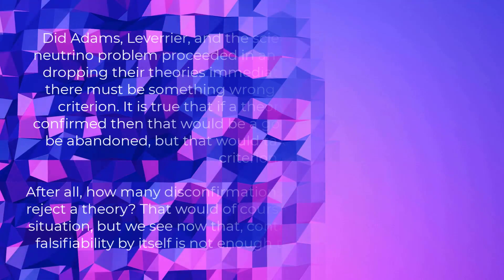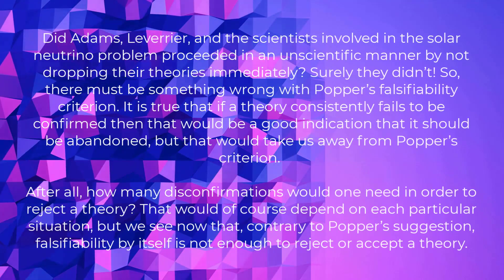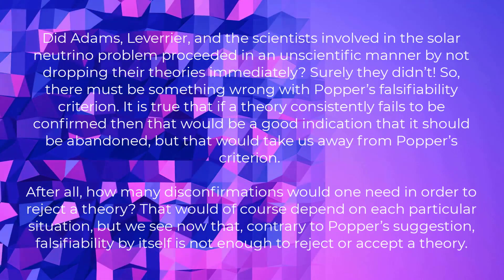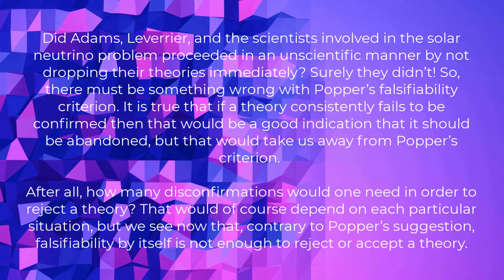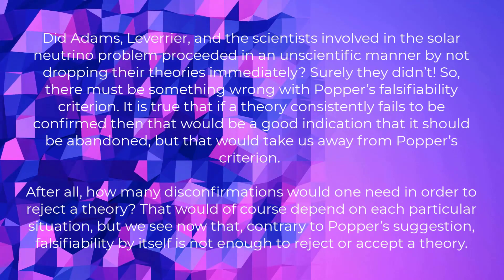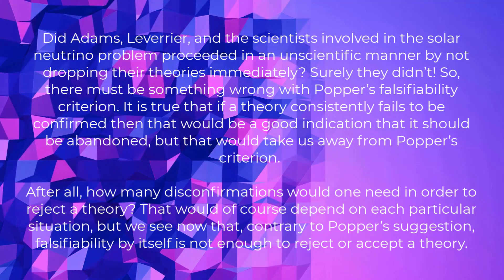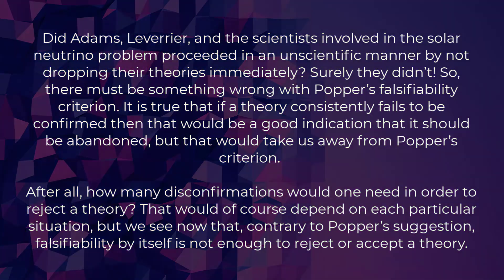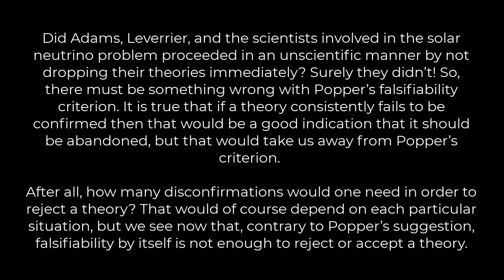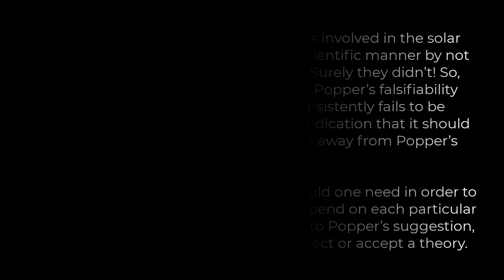Did Adams, Le Verrier, and the scientists involved in the solar neutrino problem proceed in an unscientific manner by not dropping their theories immediately? Surely they didn't. So there must be something wrong with Popper's falsifiability criterion. It is true that if a theory consistently fails to be confirmed, that would be a good indication that it should be abandoned, but that would take us away from Popper's criterion. After all, how many disconfirmations would one need in order to reject a theory? That would depend on each particular situation, but we see now that, contrary to Popper's suggestion, falsifiability by itself is not enough to reject or accept a theory.